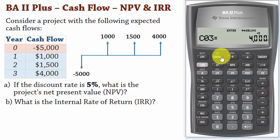To find the net present value, press the NPV button. The screen displays I, the discount rate. Since the discount rate is 5%, input 5. Press enter.